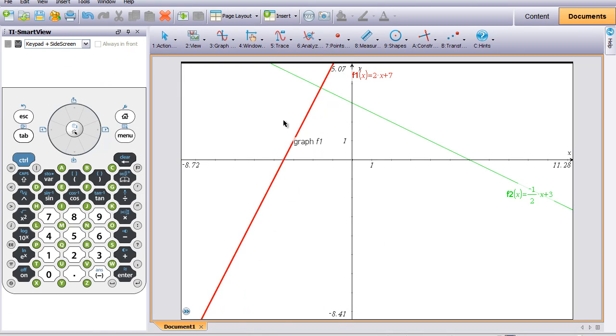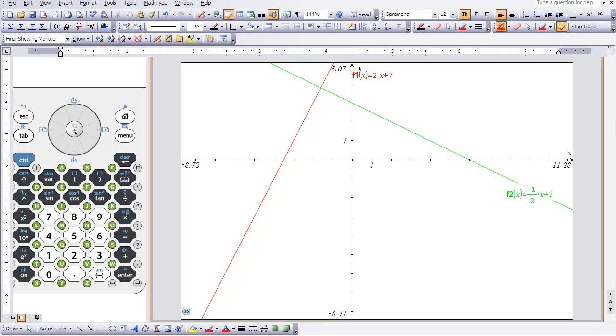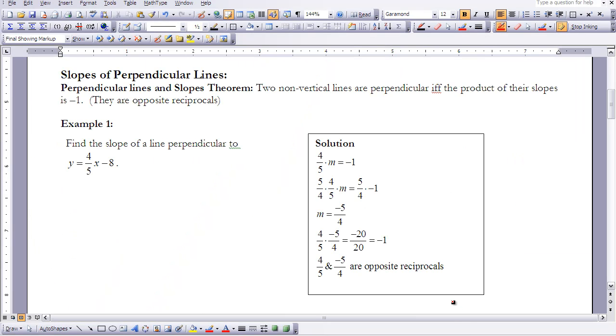Notice here I have two lines that I graphed, and this line here in red has a slope of 2, and my slope here, the green one, has a slope of negative 1 half. These lines appear to be perpendicular. Now if we go back to our notes, in our theorem, it says that if the products of their slope is negative 1, or they're opposite reciprocals.